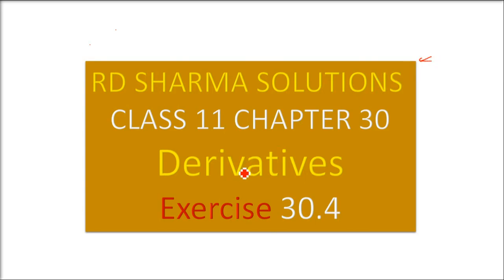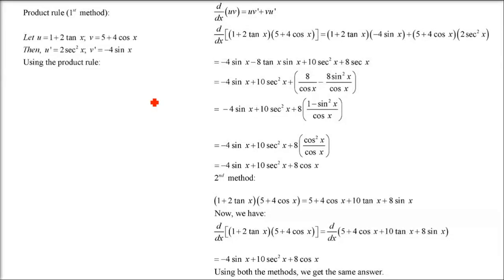This is R.D. Sharma solution class 11, chapter 30, derivatives, exercise 30.4. The next question is: differentiate in two ways using the product rule and otherwise the function (1 + 2tanx)(5 + 4cosx), and verify that the answers are the same. This is question number 25.